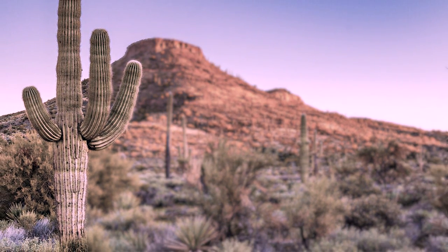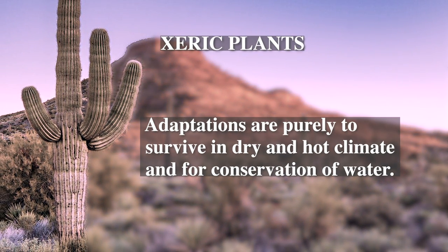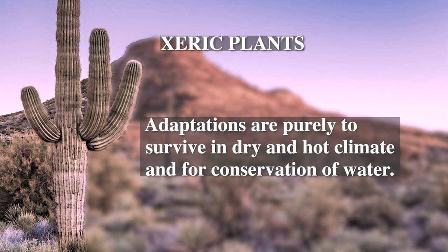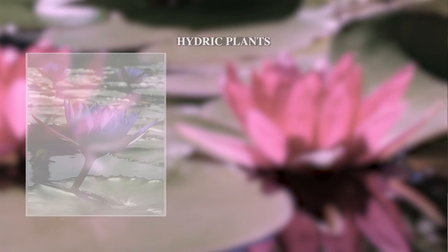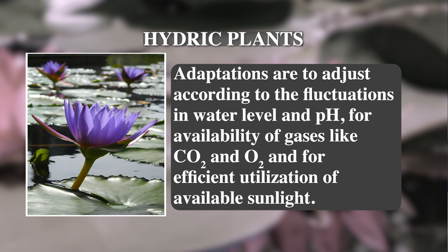In xeric plants, adaptations are purely to survive in dry and hot climate and for conservation of water. While in hydric plants, main adaptations are to adjust according to the fluctuations in water level and pH, for availability of gases like carbon dioxide and oxygen, and for efficient utilization of available sunlight.